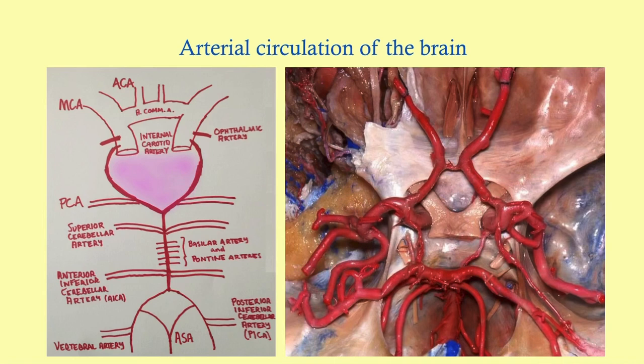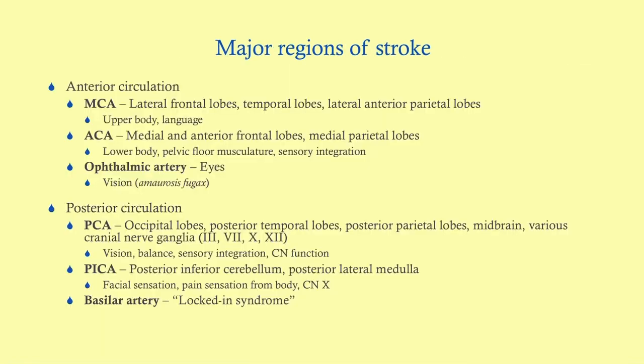This is the arterial circulation — you want to know this cold, especially for Step 1. The major regions of stroke in the anterior circulation are MCA, ACA, and ophthalmic. In the posterior circulation: PCA, PICA, and basilar. MCA stroke is the most common and will affect the upper extremities more than the lower extremities, and can interfere with language. ACA stroke affects the lower extremities more. The ophthalmic, PCA, PICA, and basilar each have distinct presentations.